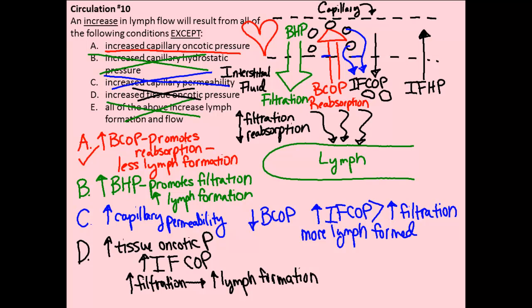Since we're looking for a situation that decreases lymph formation, we eliminate answer D as well. The correct answer is A. Hopefully by going through these different pressures, you were able to refresh and expand your knowledge of the four pressures involved in bulk flow and apply them to an actual problem. Please let me know if you have any more questions about this material.